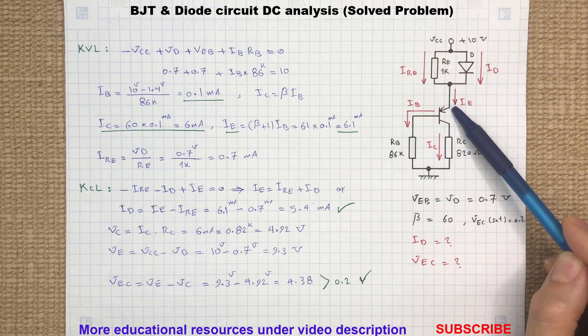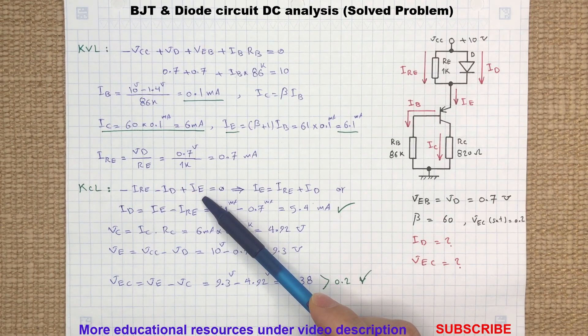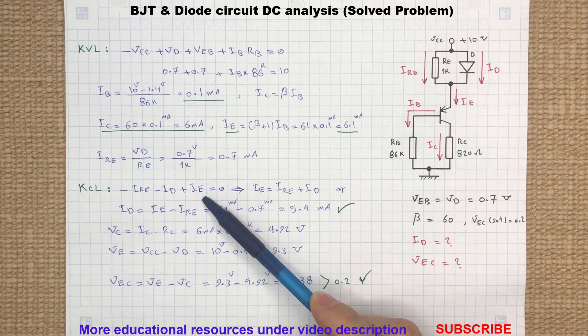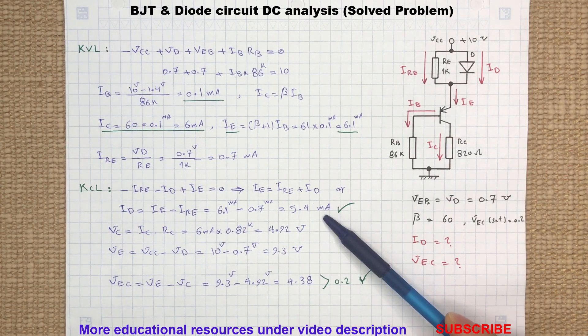Now by writing a KCL for the emitter node, we can determine the current flowing through the diode. The KCL equation says that the total currents entering the emitter node equals the current leaving the node. Solving this equation will provide us with the diode current ID.